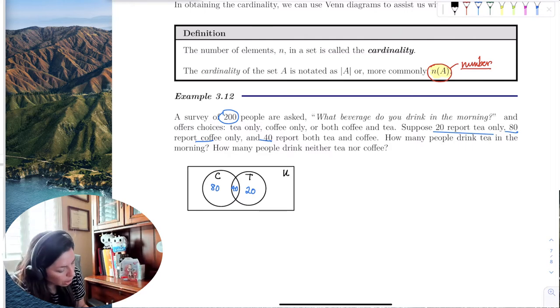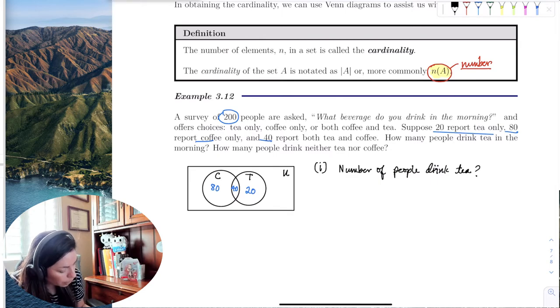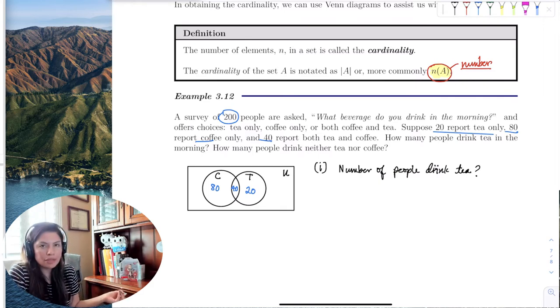So here, the first question was, how many people drink tea only, I mean tea? Well, now let's look at the set. Drinking tea, not tea only, because we already know that, that's 20, but there are people who drink tea and coffee.